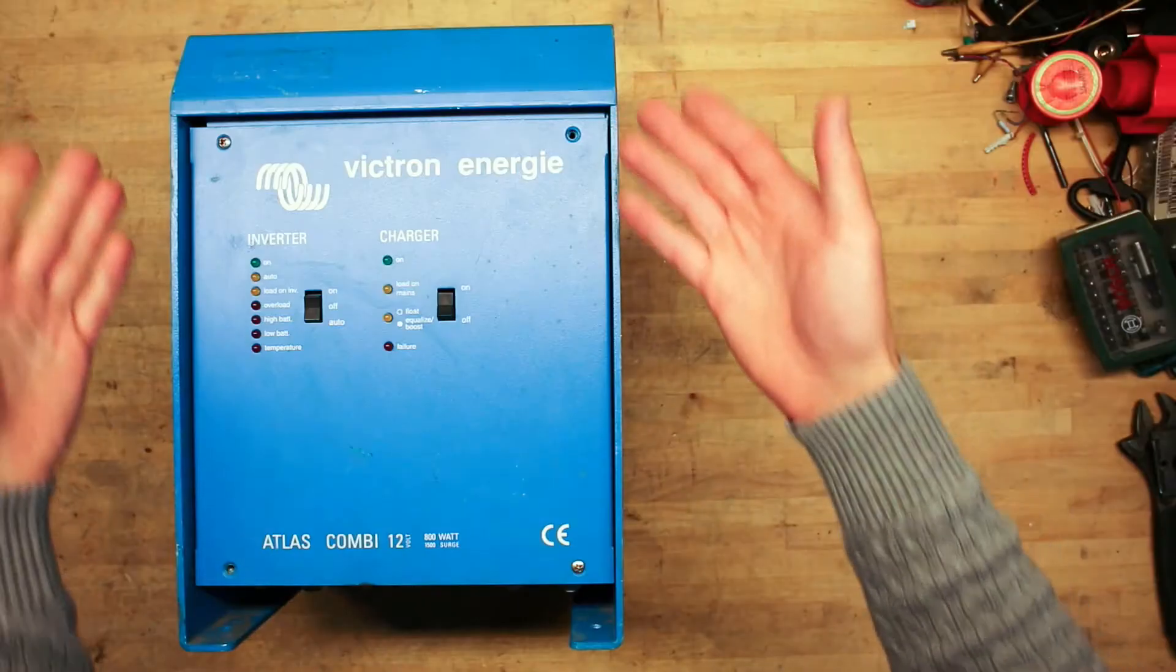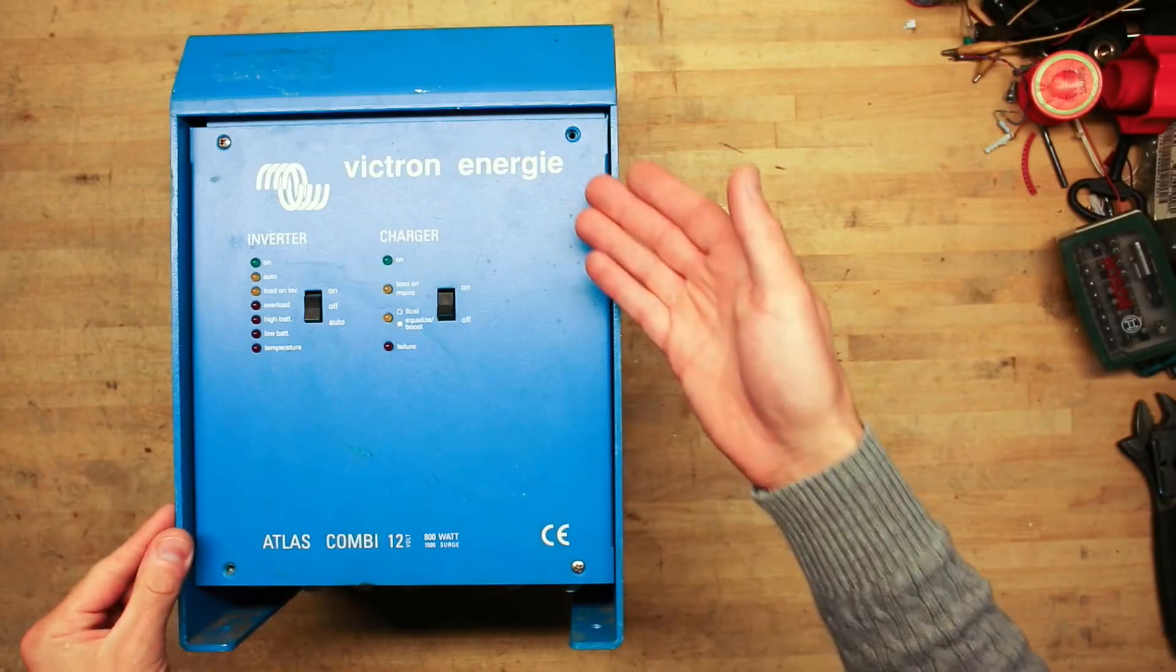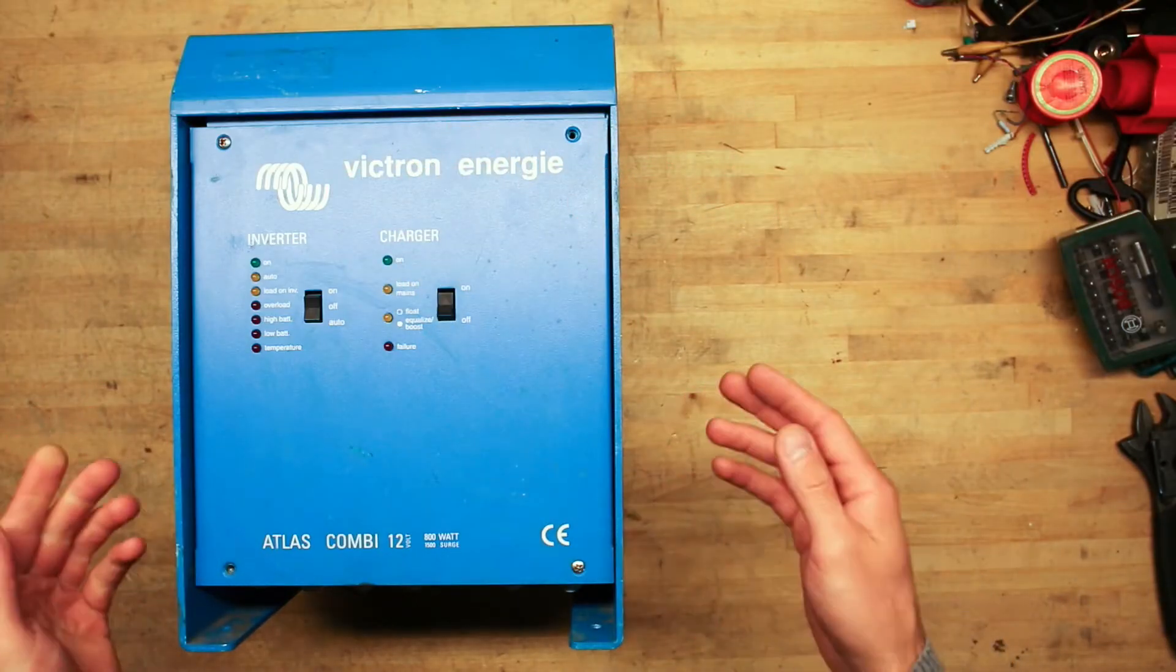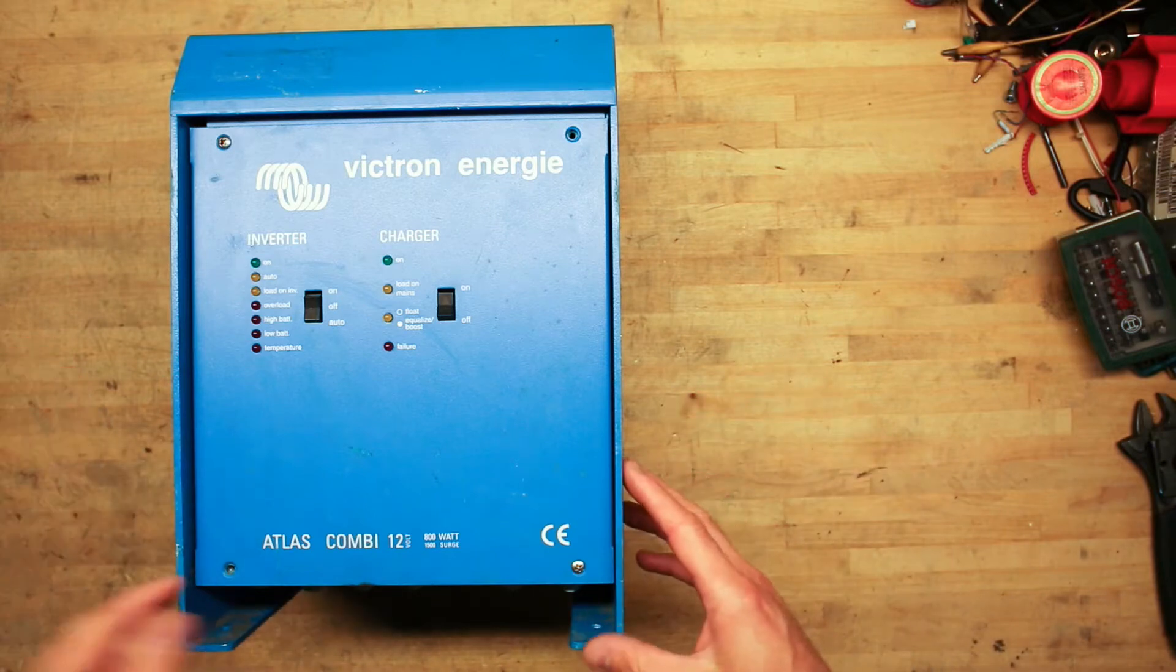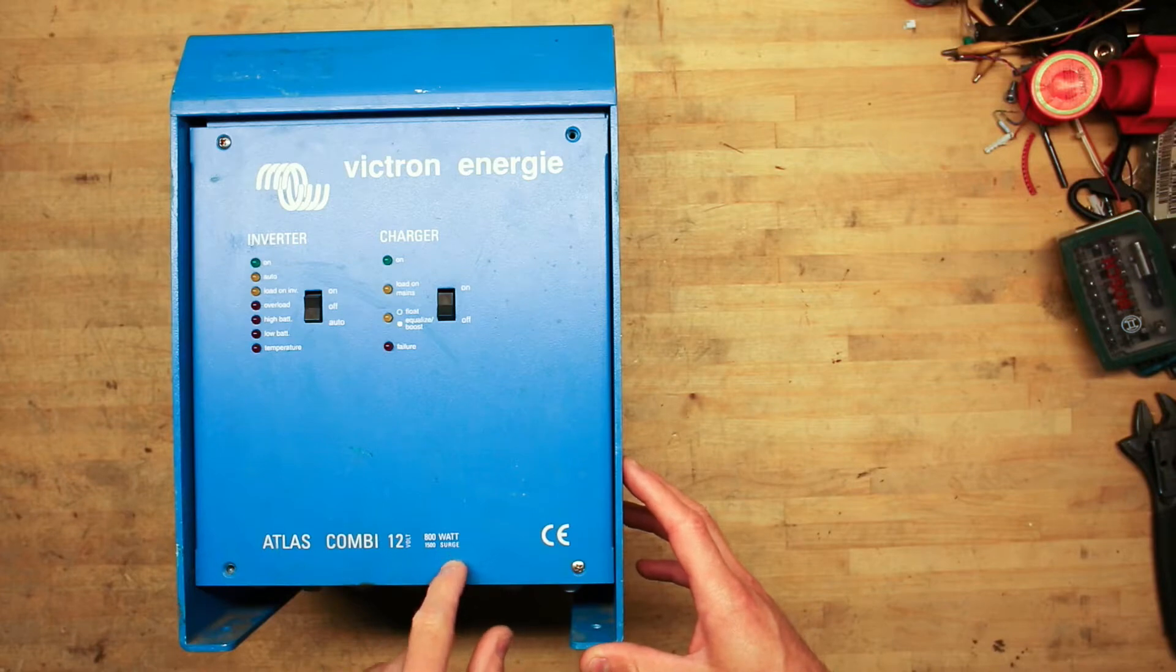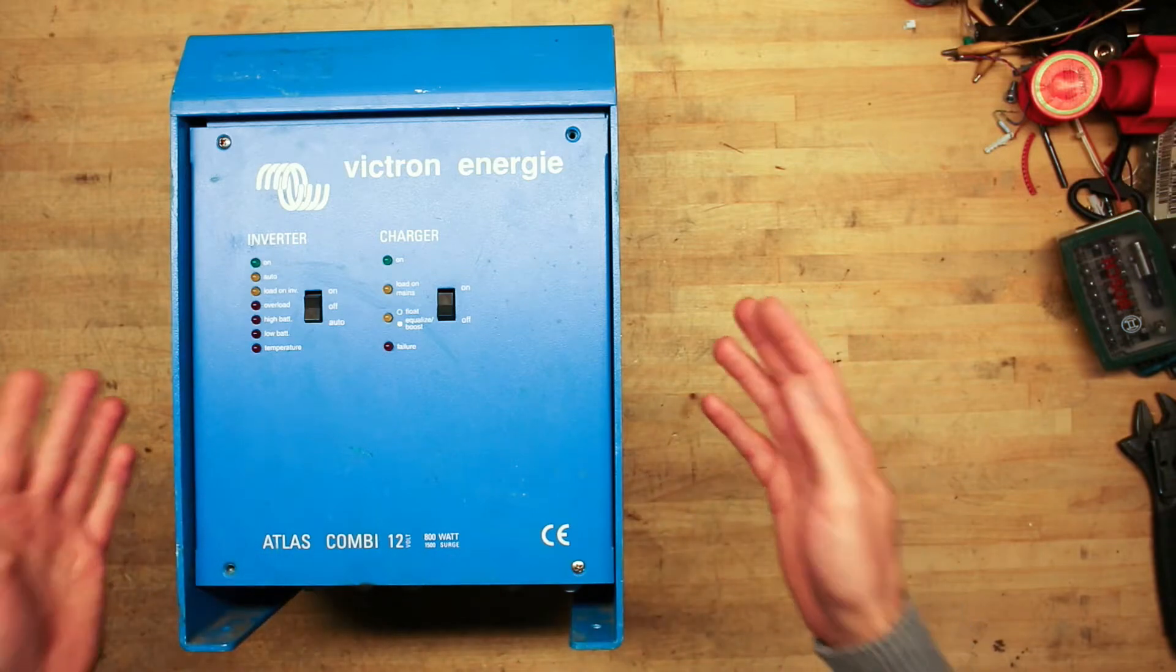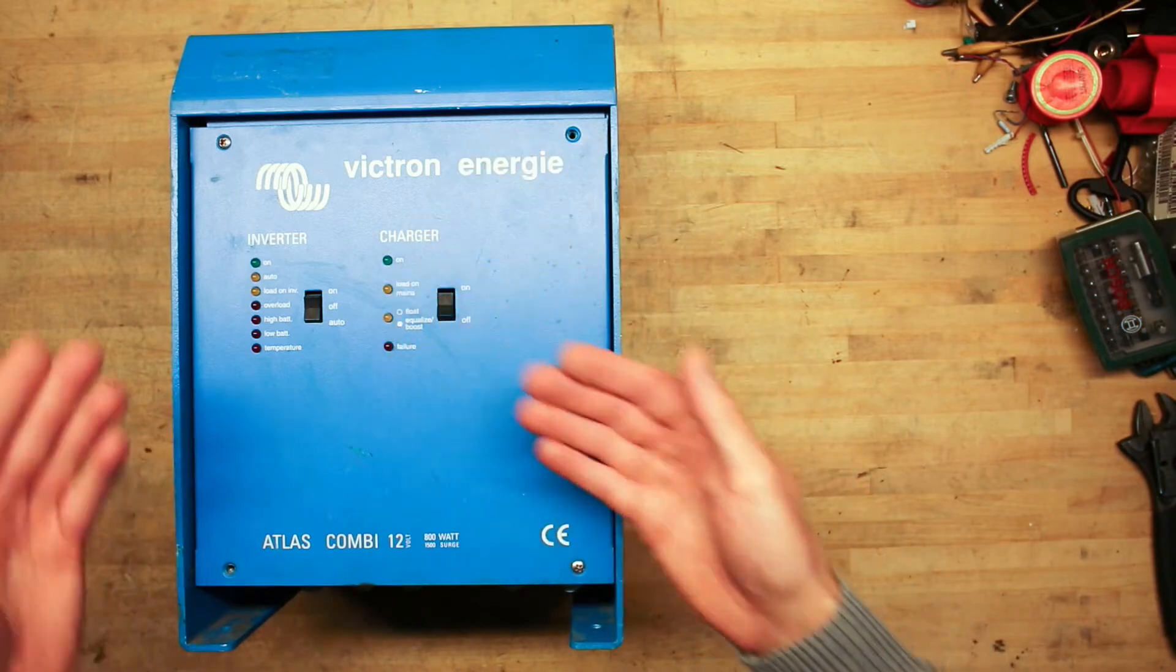So that also means tearing it down. A quick rundown of the unit. It is a Victron Energy, a company from the Netherlands. It is the Atlas Combi 12 volt, 800 watt continuous power and 1500 watt surge power. Now it consists of two parts, the charger and the inverter.